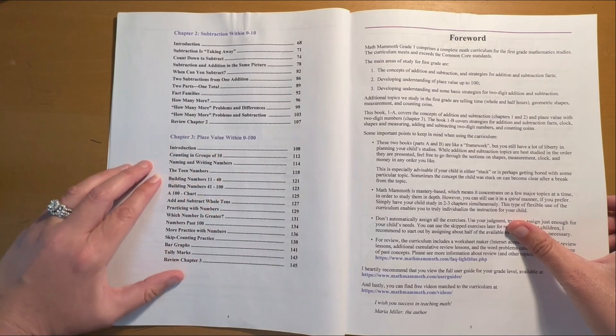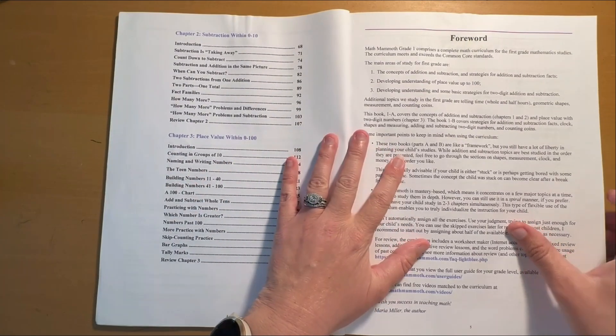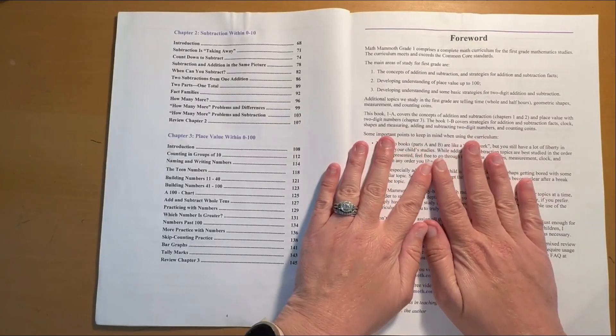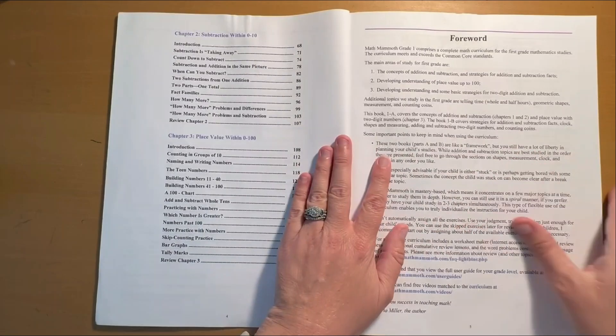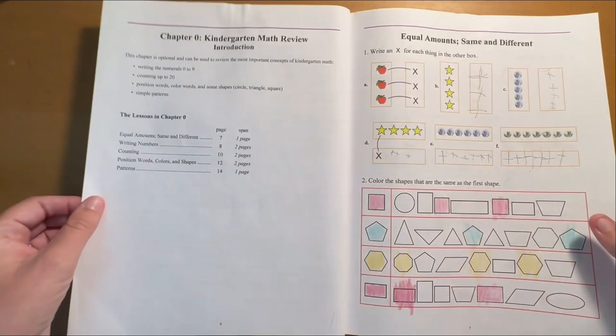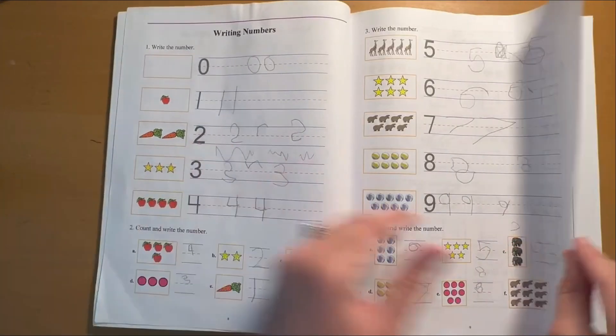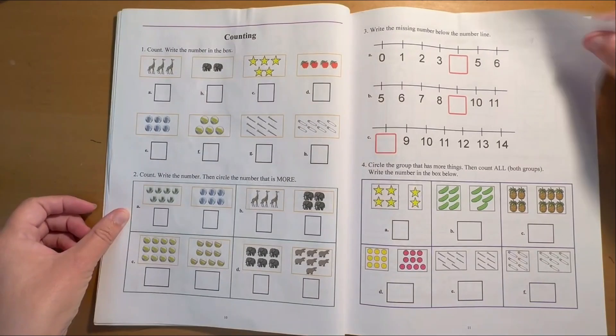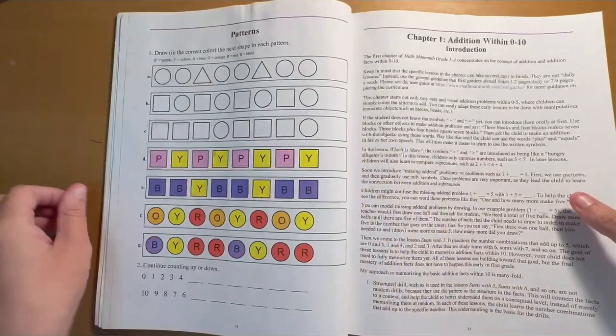Then you're going to jump into place value, and that will be the end of the first book. There are two of these workbooks that make up one unit or one level. So she'll have a forward here that gives you some information. This is the review chapter, so there's not the normal beginning thing. As you can see, we skipped some of this because my kids had mastered it.